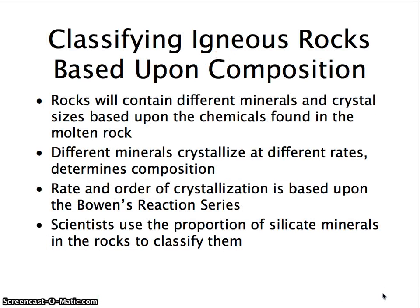The third way we identify igneous rocks is based on their composition. Rocks will contain different minerals and crystal sizes based upon the chemicals found in the magma or lava. The mineral compositions crystallize at different rates, and this determines the composition. The rate and order of crystallization is based upon Bowen's reaction series, which I will not test you on, but we're going to look at it today. Scientists use the proportion of silica and silicate minerals in rocks to classify them.